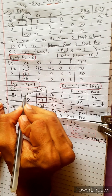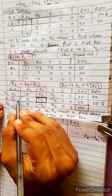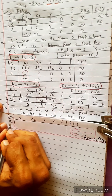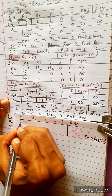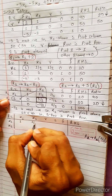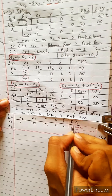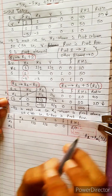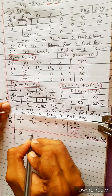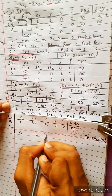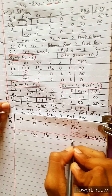X2 will enter the basis as it is the pivot element column. The updated tableau rows are: R1 remains 1, 1 by 2, 1 by 2, 0, 0, 20. R2 is the pivot row divided to get: 0, 1, minus 1 by 3, 2 by 3, 0, 20. R3 is: 0, minus 1 by 2, 5 by 2, 0, 1, 100.